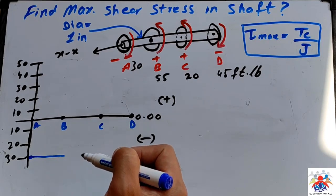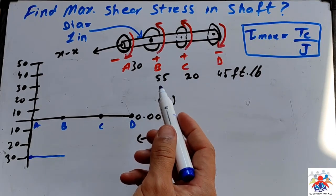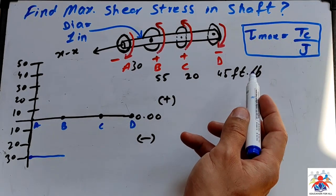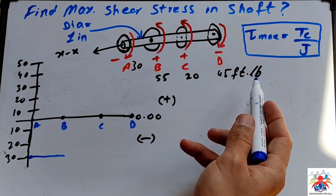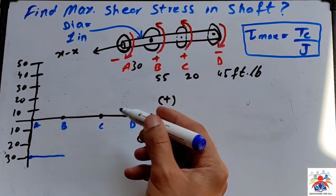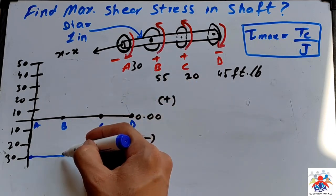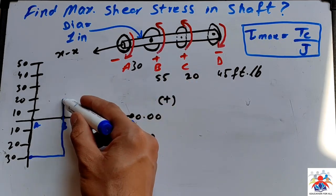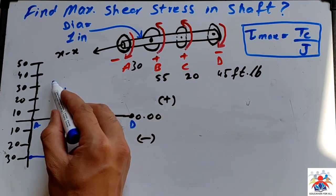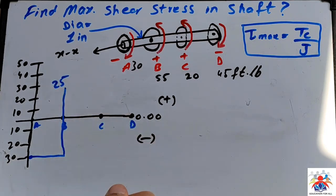I draw a line here. Then from A to B we go with a straight line, and then it says you need to go 55 units, or 55 foot-pounds, upwards. Of course positive, that's why it's upwards. We will go up and reach 25, so minus 30 plus 55 we get 25.